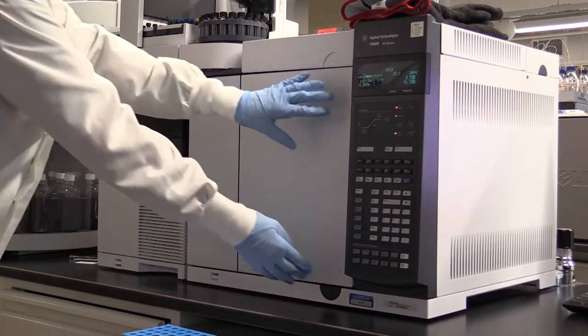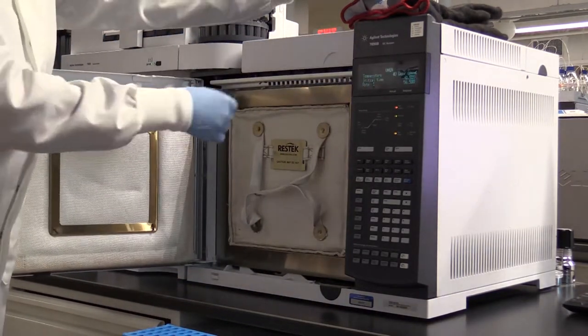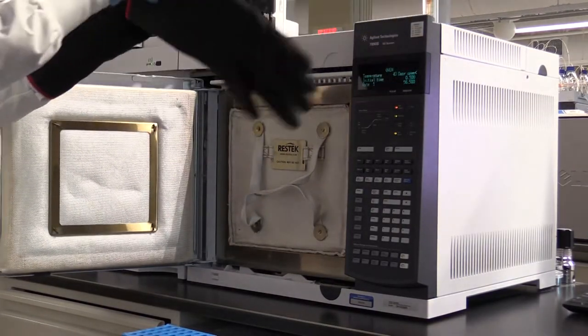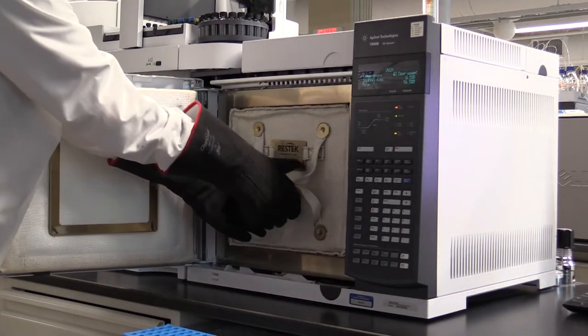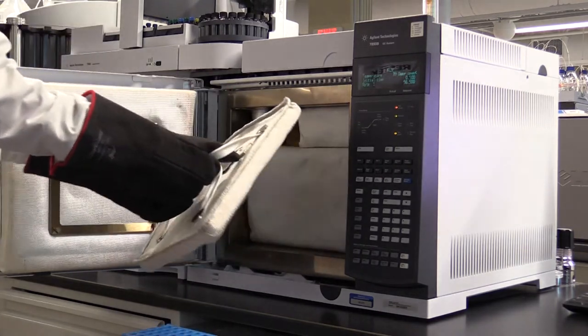The metal fasteners and label tag on the plate insert may still be hot even after the GC oven is cooled down. To avoid burns, use the strap to remove the plate insert or wear heat-resistant gloves. To remove the plate insert, grip the strap and remove it by pulling the bottom edge out first.